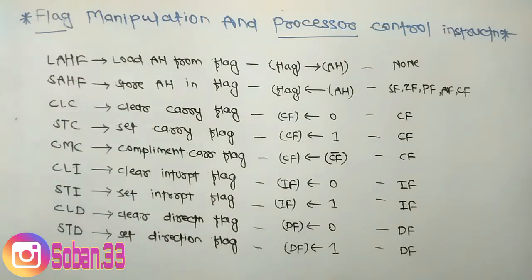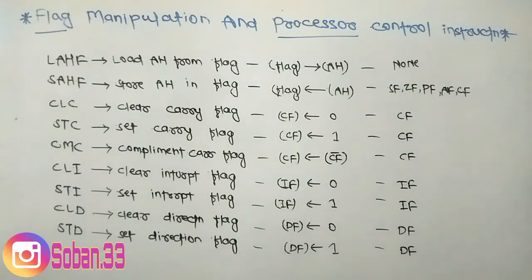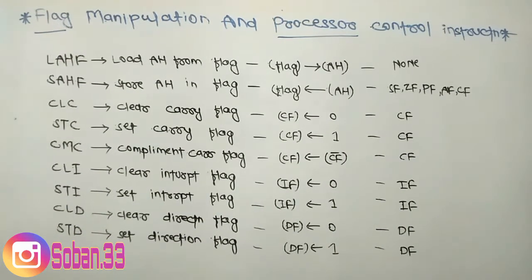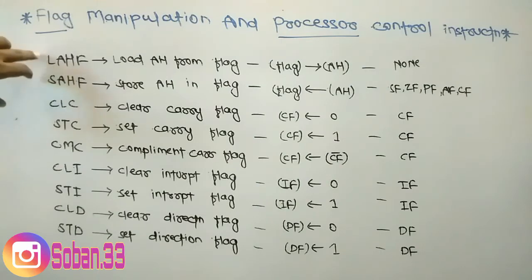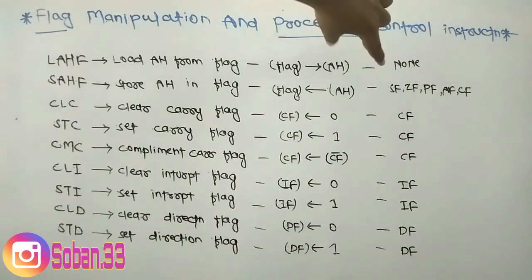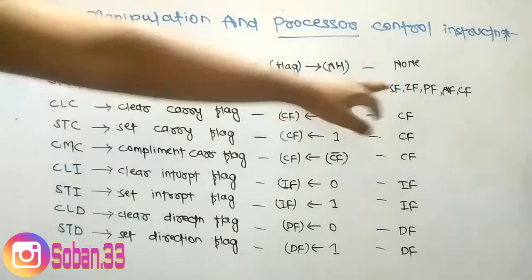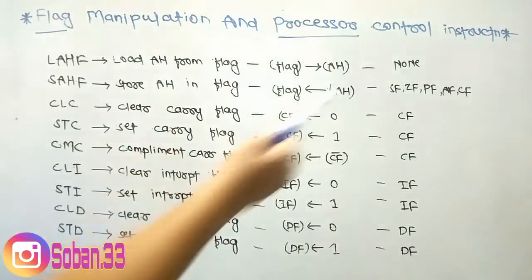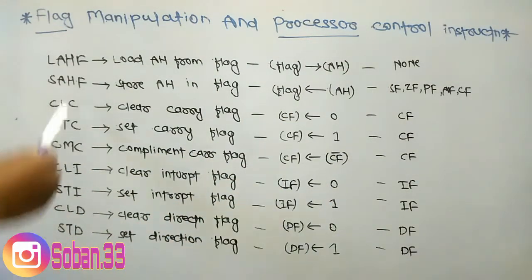To summarize: the carry flag, interrupt flag, and direction flag values are always either zero or one. The complement instruction inverts the carry flag's current value. When we need to modify these flags, we use the corresponding flag manipulation instructions. The relevant flags — SF, ZF, PF, AF, CF — can be changed or read using these instructions.